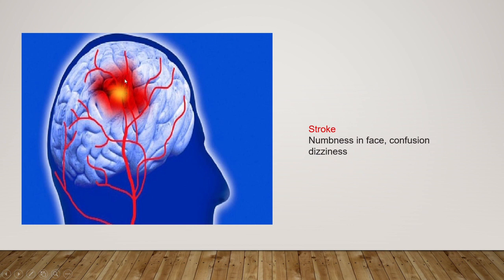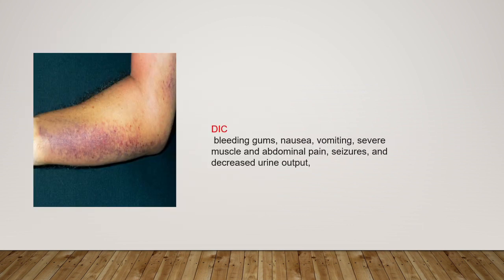For stroke, a clot travels to a blood vessel in the brain and blocks it, causing the patient to have stroke or paralysis. In that case, symptoms like confusion and disorientation appear. Another condition is DIC — disseminated intravascular coagulation — where the patient may have severe vomiting, abdominal pain, and decreased urine output. In all these conditions, the doctor will order the D-dimer test.